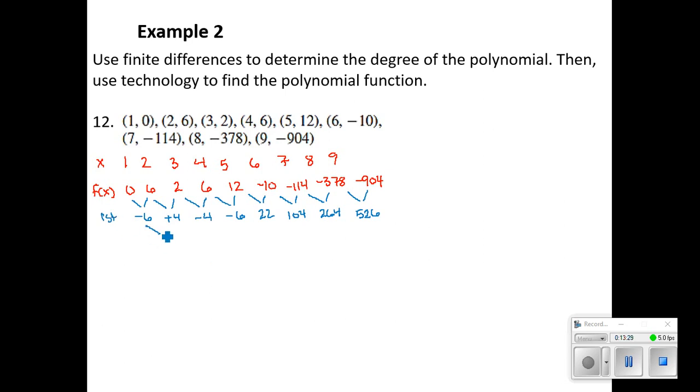So not first difference. Let's try second. -6 minus 4. 4 minus -4. -4 minus -6. -6 minus 22. 22 minus 104. 104 minus 264. 264 minus 526. So it wasn't a second difference.